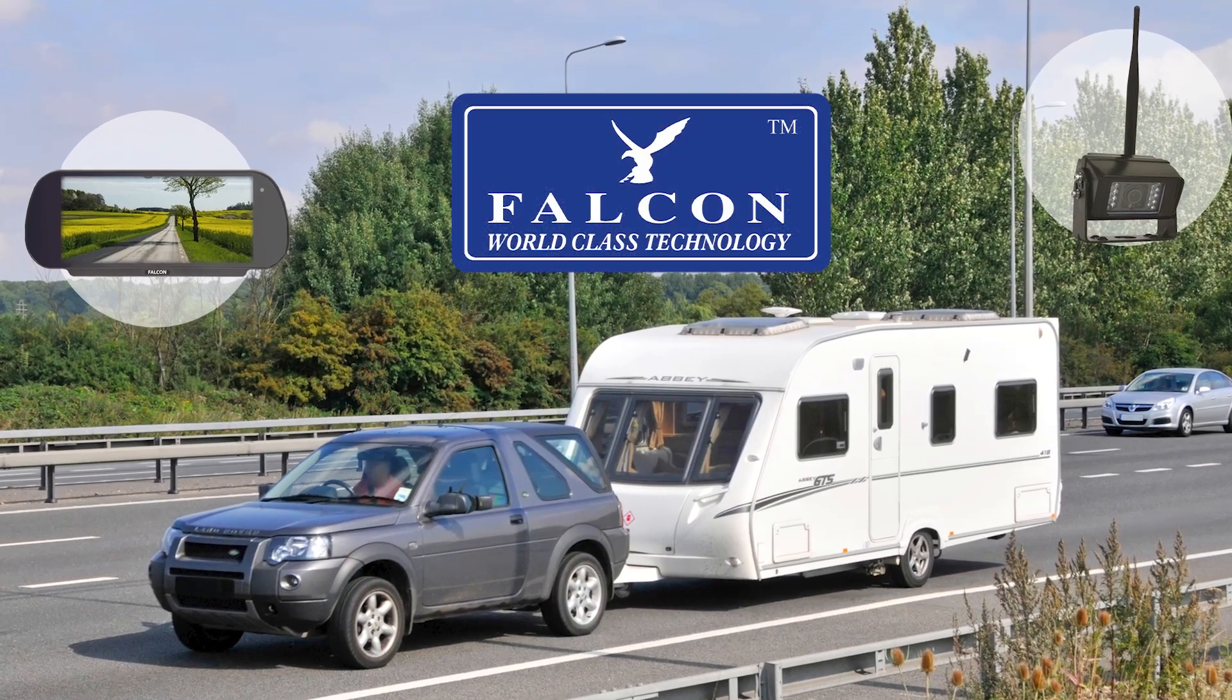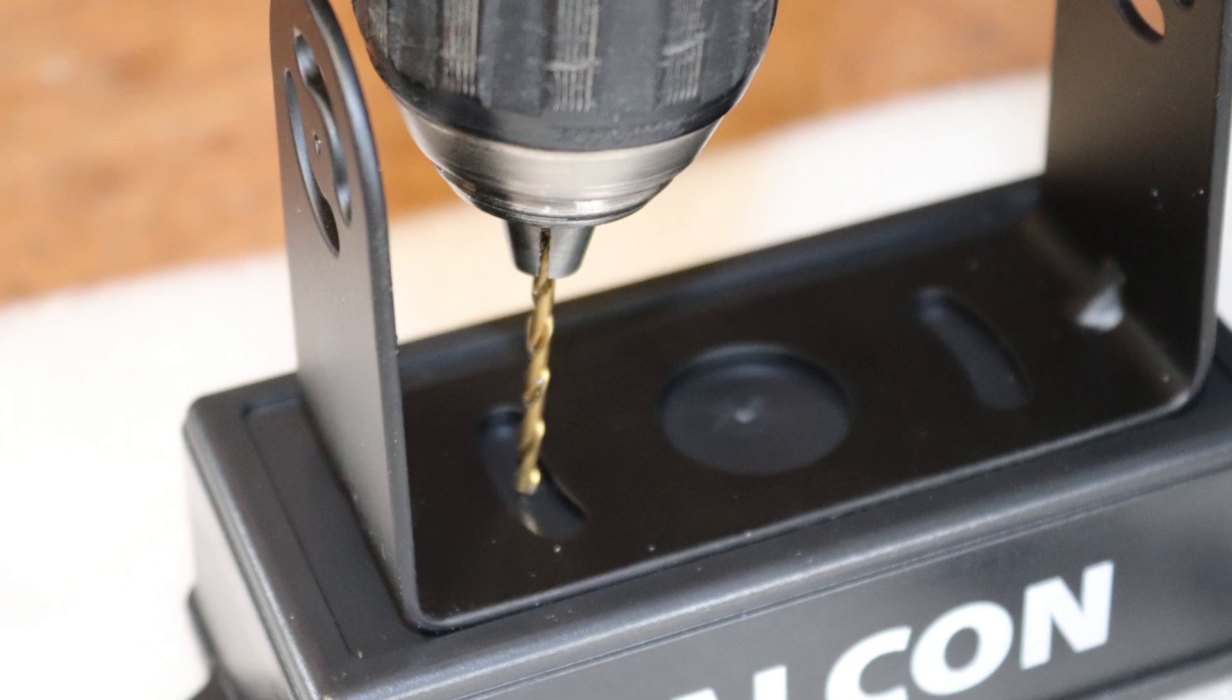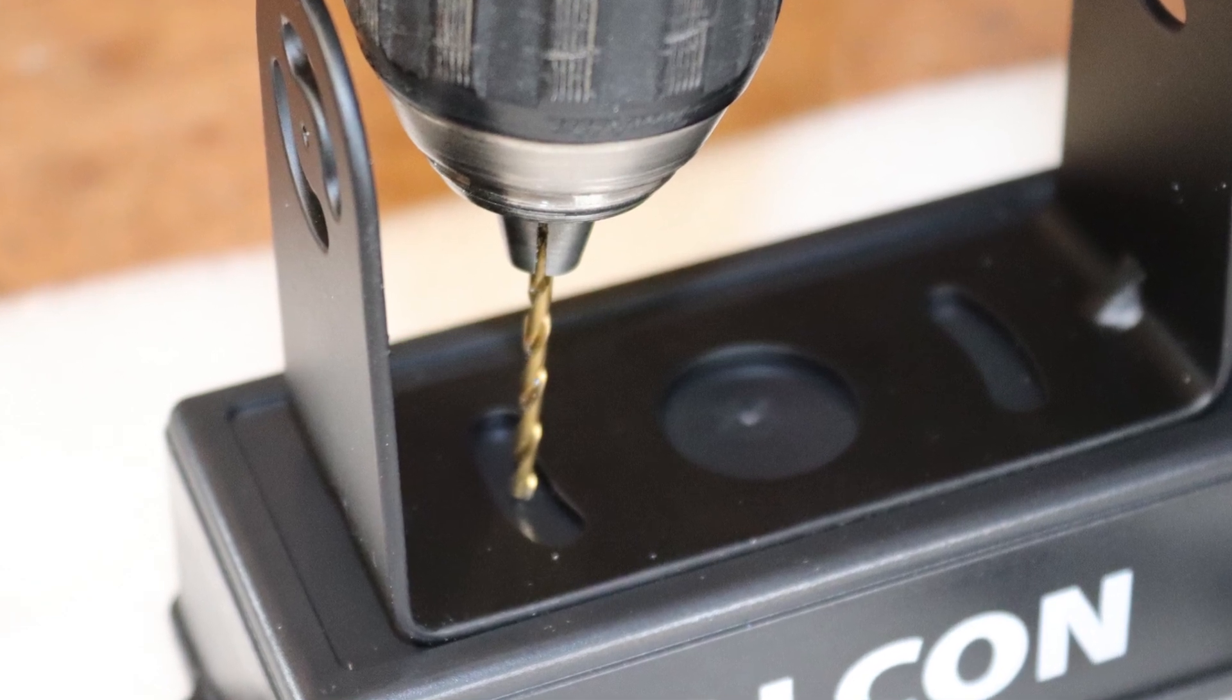How to install the Falcon Wireless Camera with Mirror Monitor. Begin by pre-drilling holes into your mounting box using the camera bracket to position the holes.